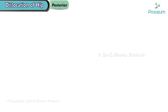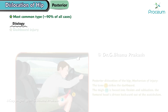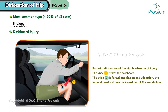Posterior hip dislocation. It's the most common type of hip dislocation, accounting for approximately 90% of all cases. Etiology. It's often caused by a dashboard injury, which occurs when a force is applied to the knee of a flexed, adducted, and internally rotated hip, such as in a motor vehicle accident where the knee strikes the dashboard.